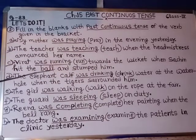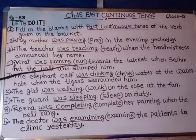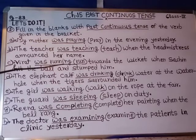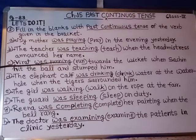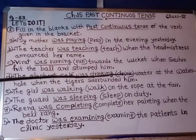C: Virat was running towards the wicket when the fielder hit the ball and stumped him. With the verb 'run', since it ends with a consonant preceded by a vowel, we double the consonant and add ing: running. Virat is singular, so we use 'was'. The answer is: was running.